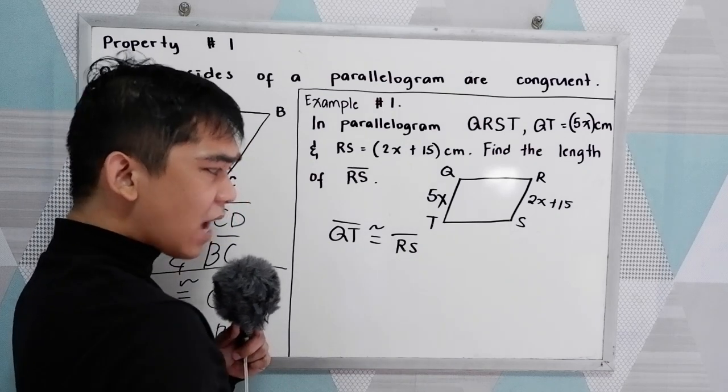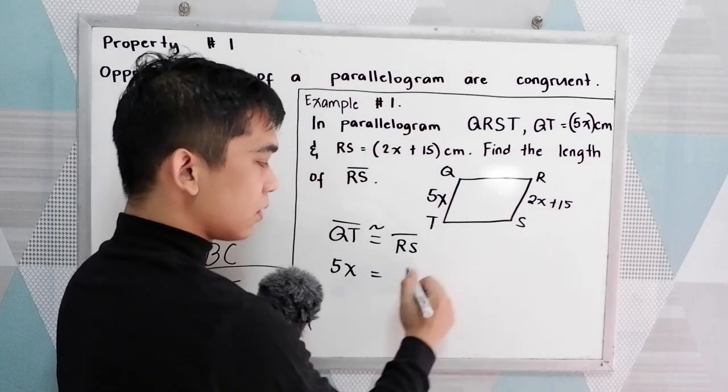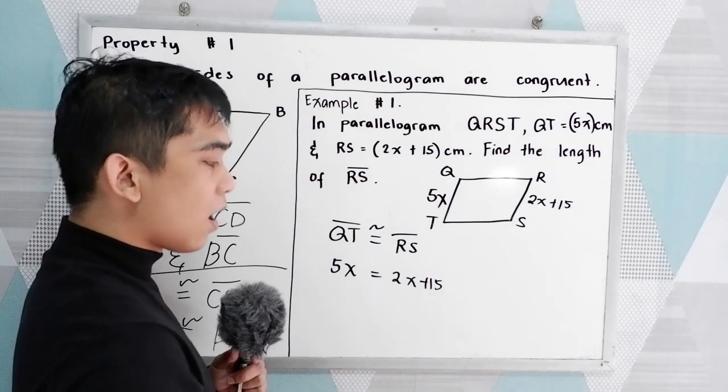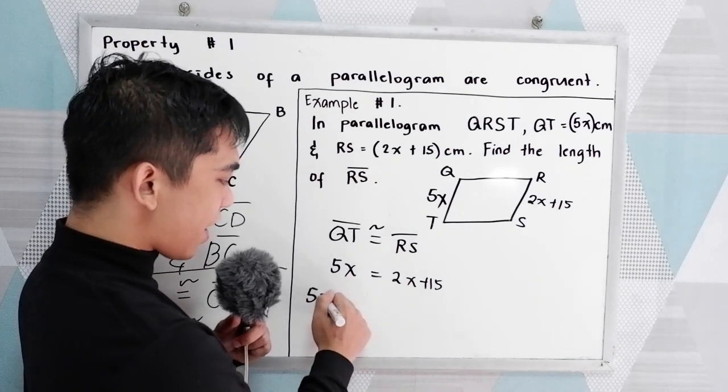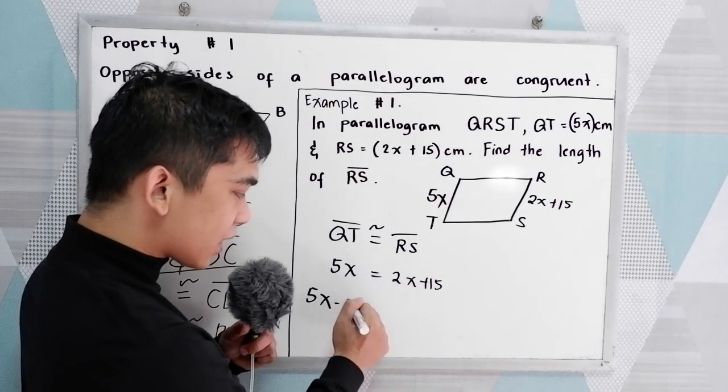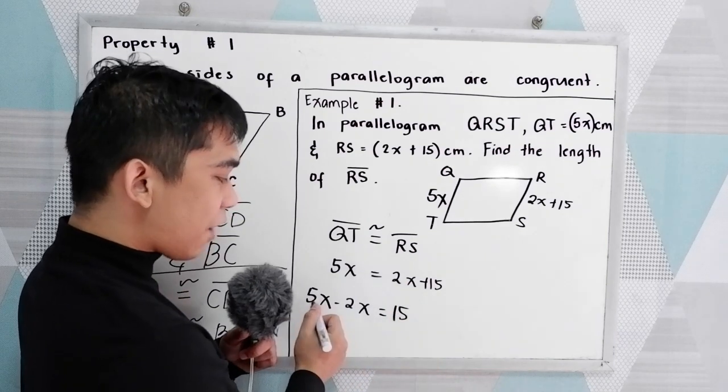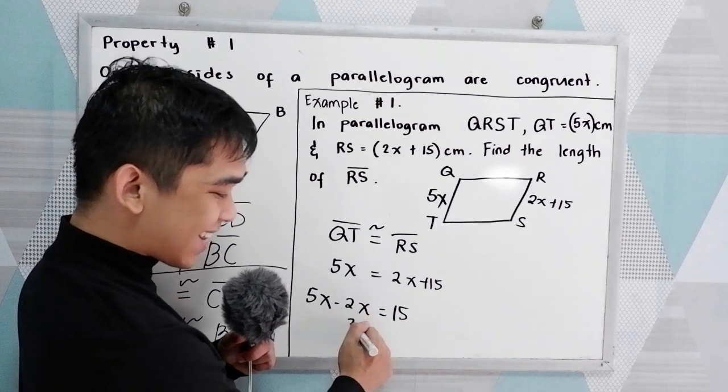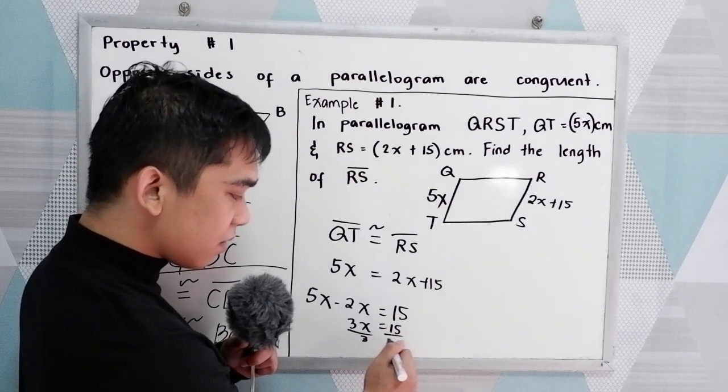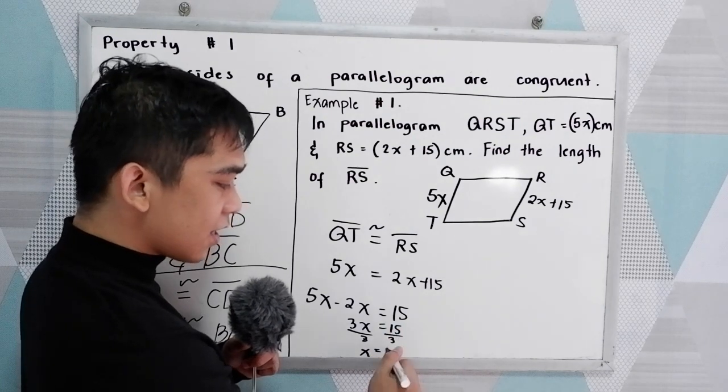Now solve for x. QT, 5x is equal to 2x plus 15. Addition property of equality. So 5x, move positive 2x from the right going to left. So that will become negative 2x is equal to 15. 5x minus 2x, that is 3x is equal to 15. Now divide by 3. So x is equal to 15 divided by 3. That is 5.